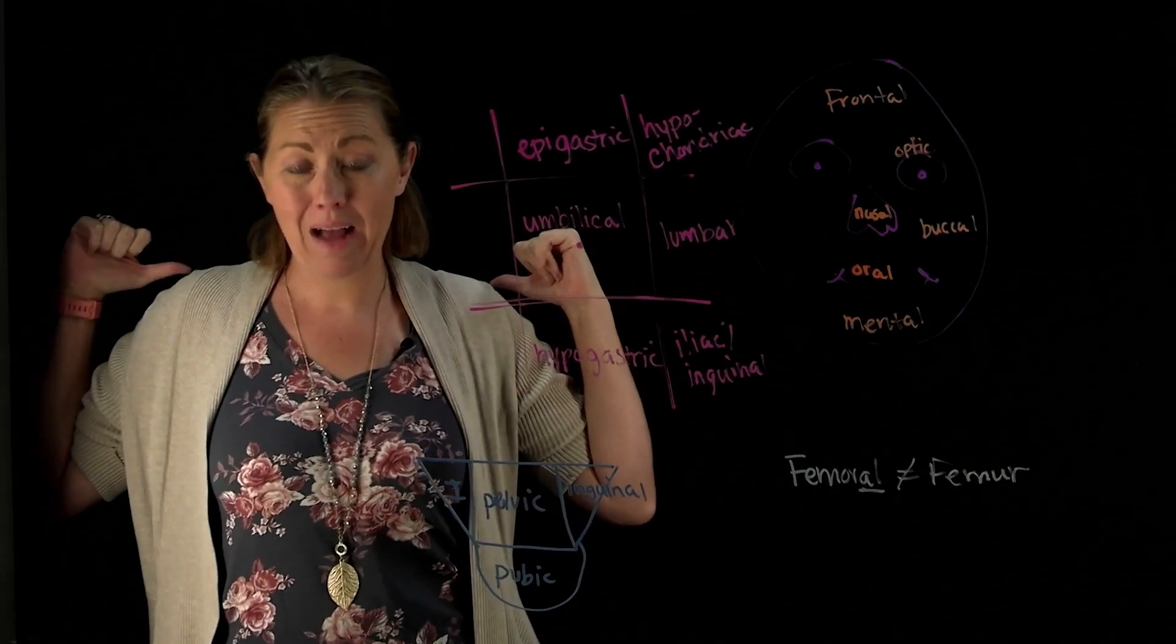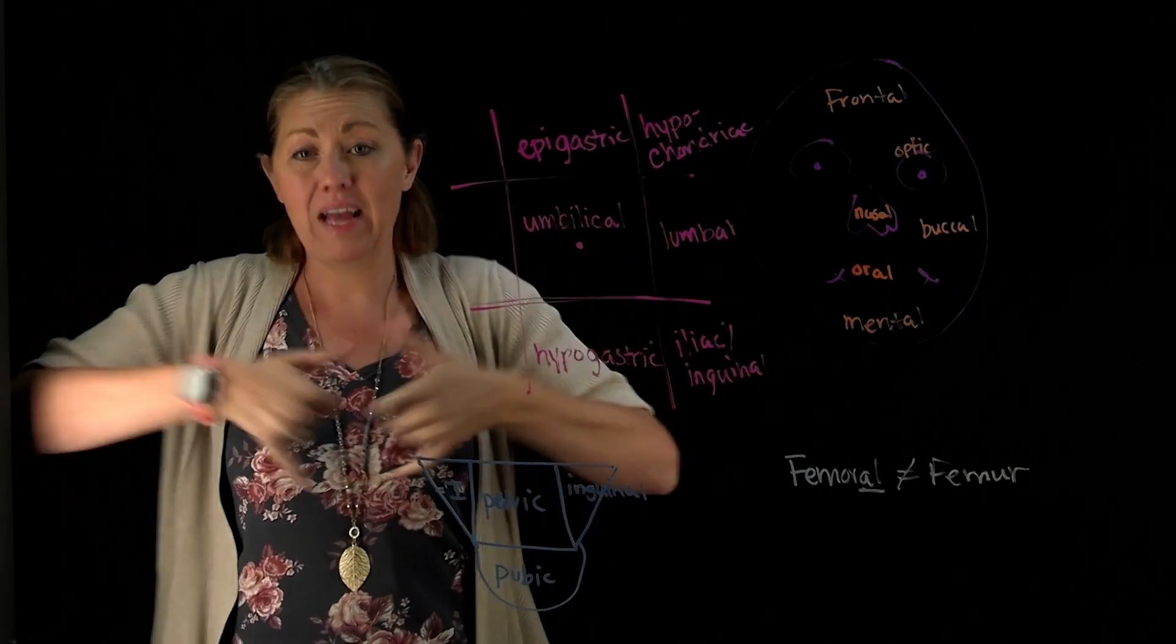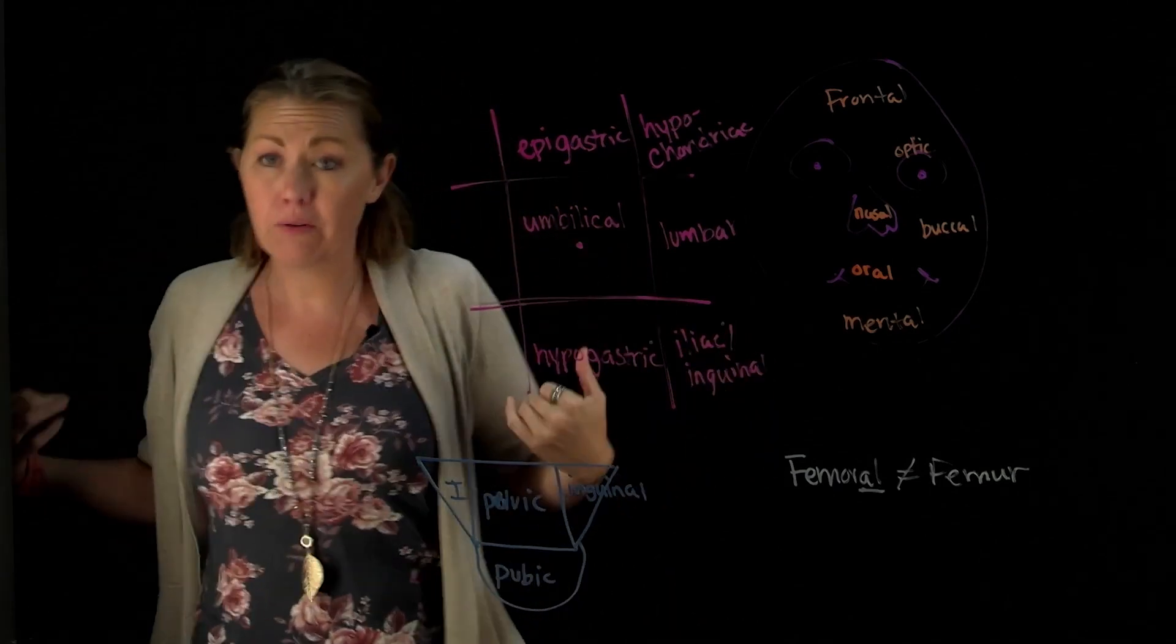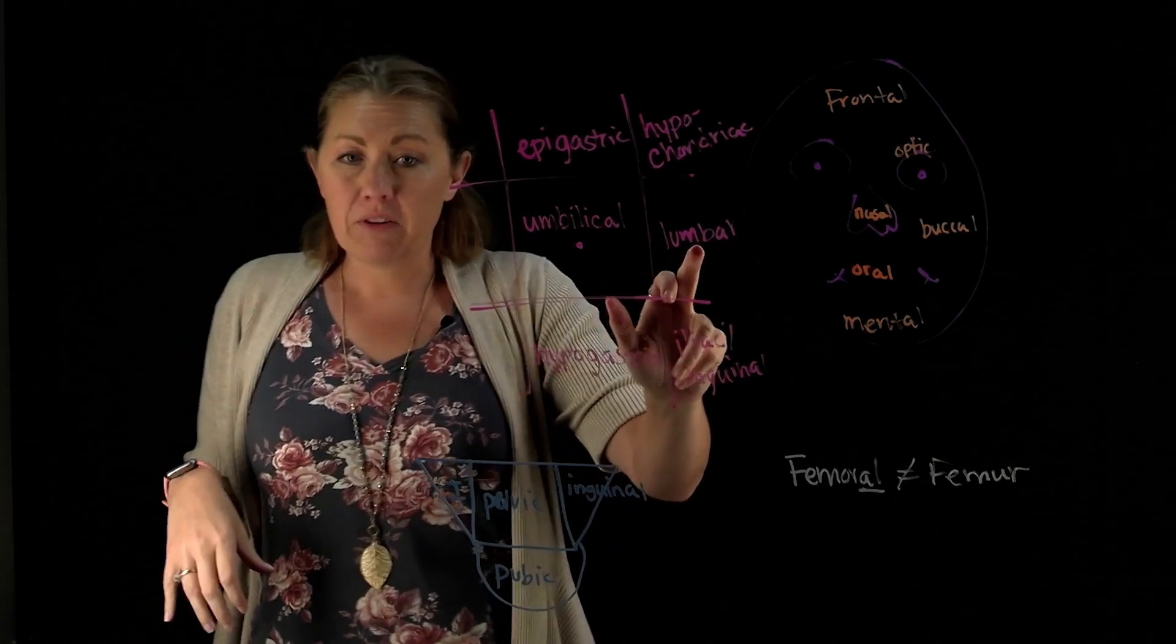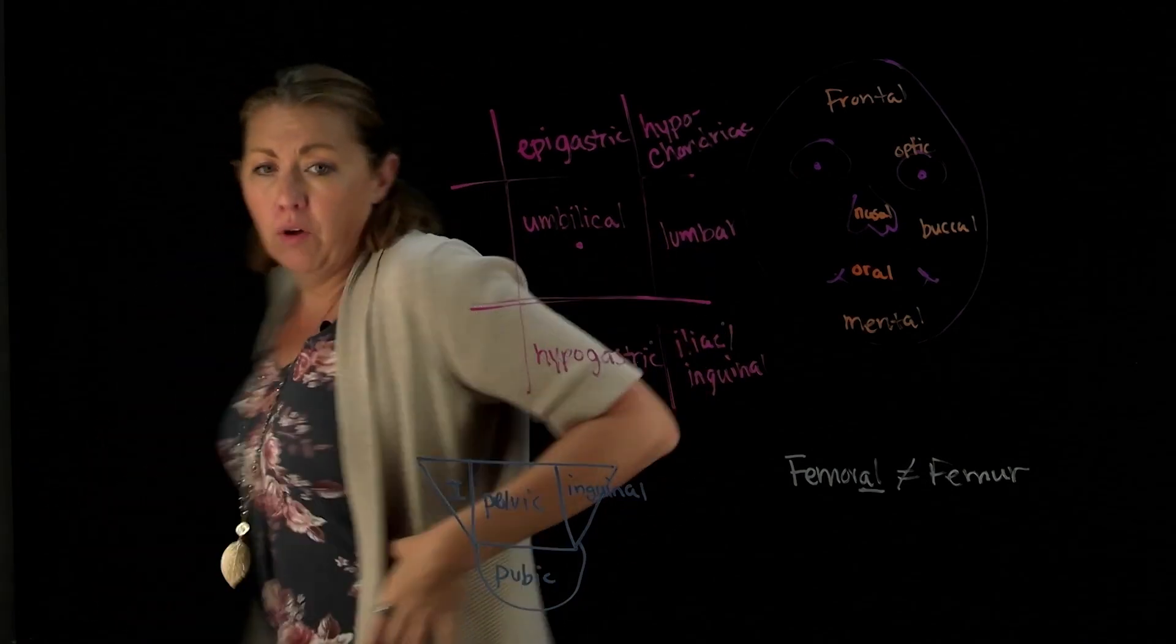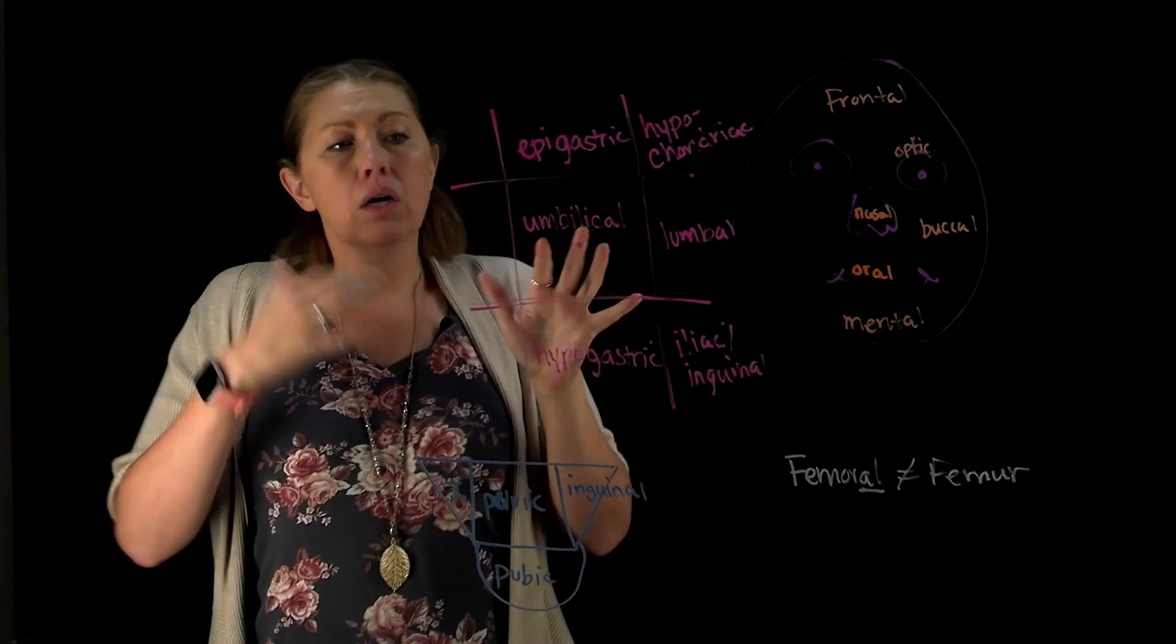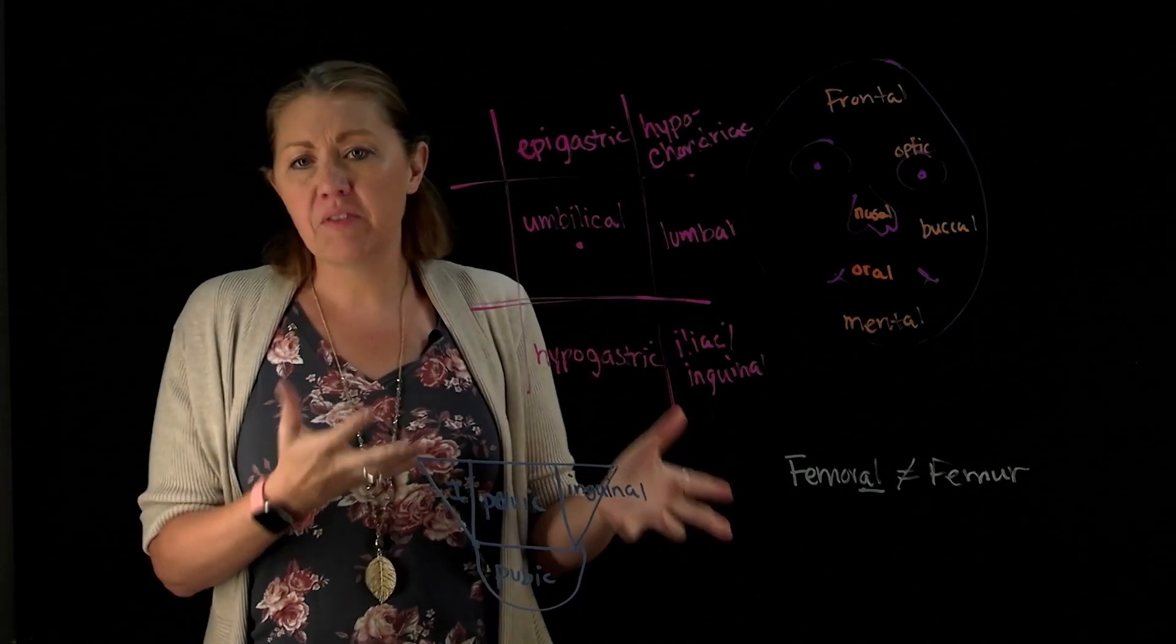If we look at something like thoracic, that's all of the upper part of the torso, all the way around. Lumbar would be another example. You can see it here in the front, but it's also lower back down here. Hopefully you use some of the advice that I gave in this.